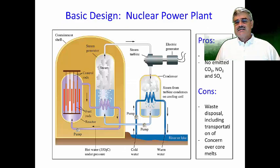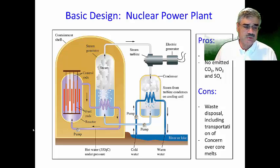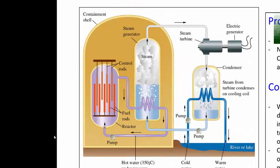This is a basic design of a nuclear power plant. Nuclear power plants use either uranium-235 or plutonium-239 as a fuel source, indicated by the fuel rods shown on the left. We need a critical mass of the fissionable nuclides; once we have that critical mass, a chain reaction occurs, releasing energy as an exothermic process, which is then used to heat water.